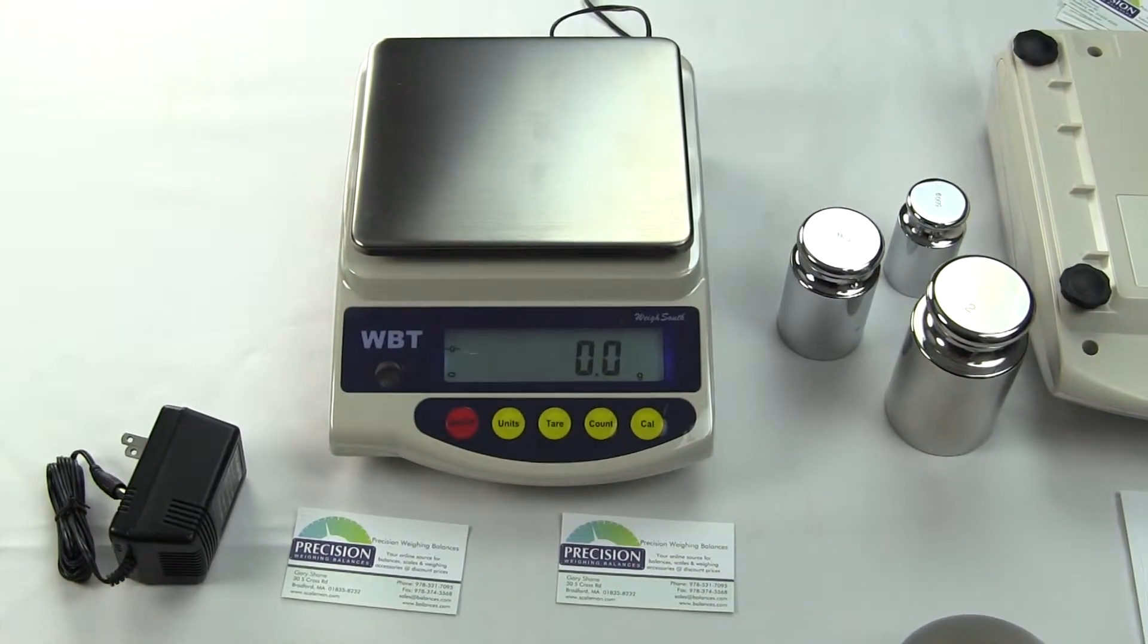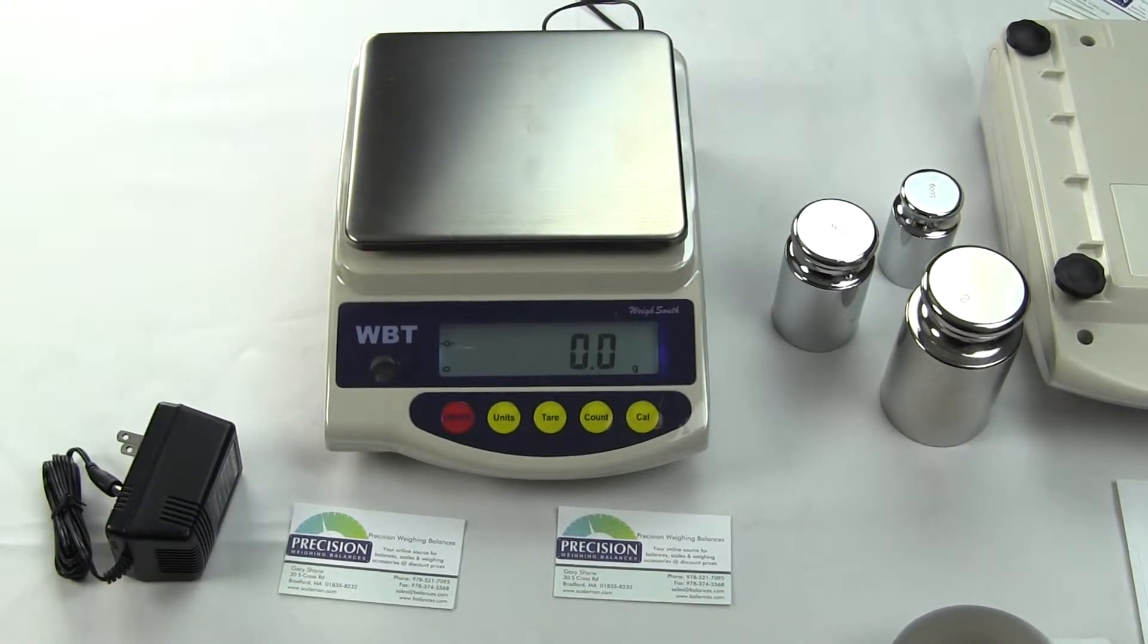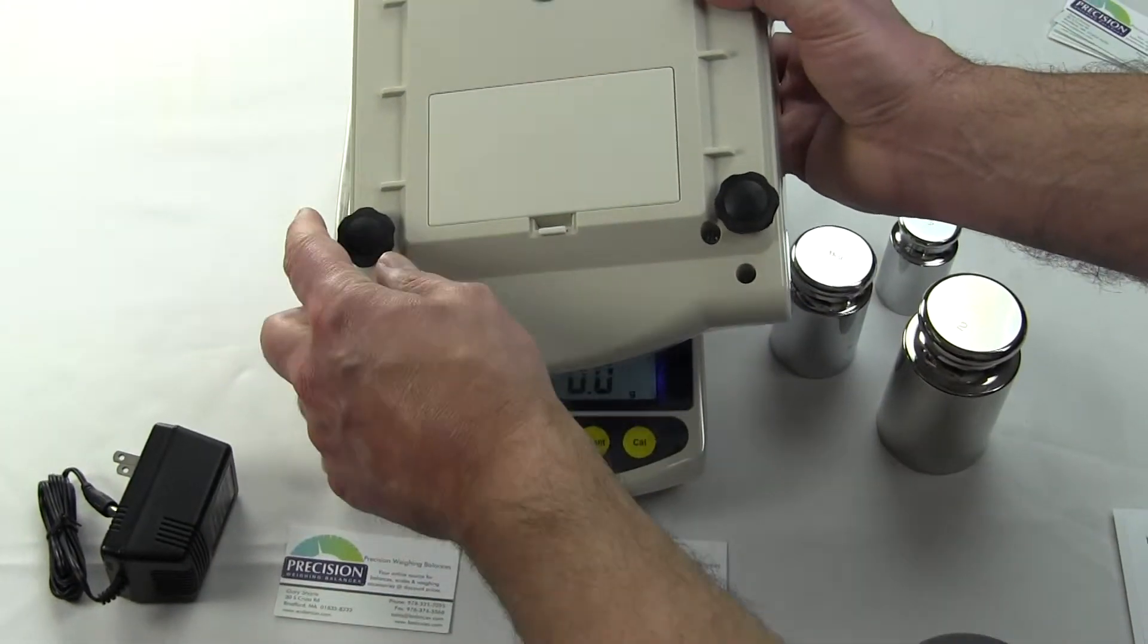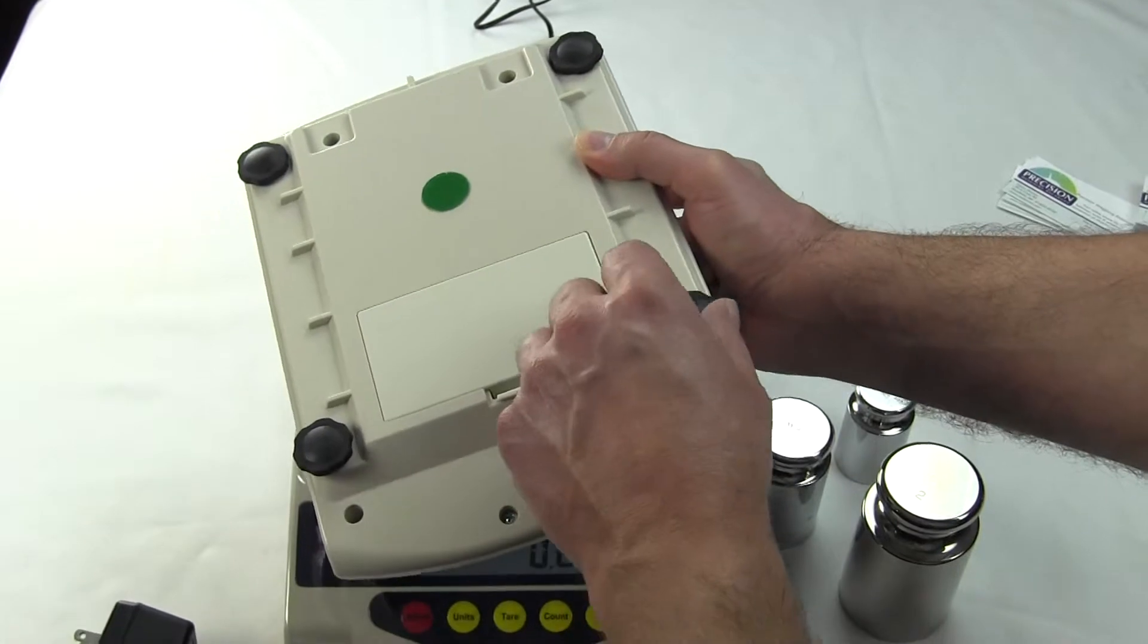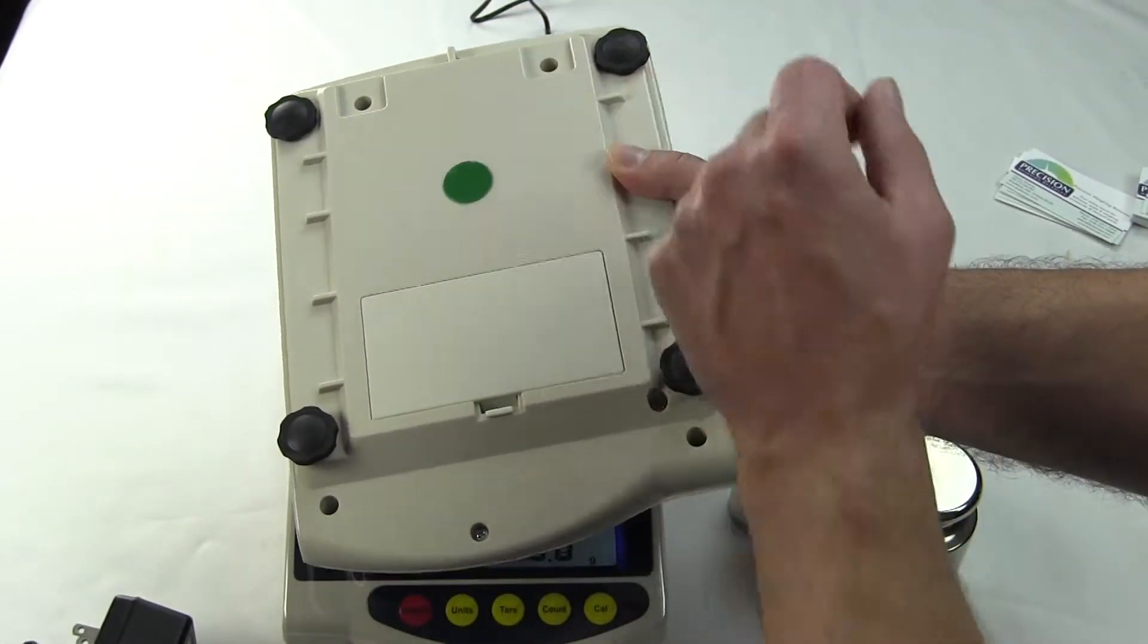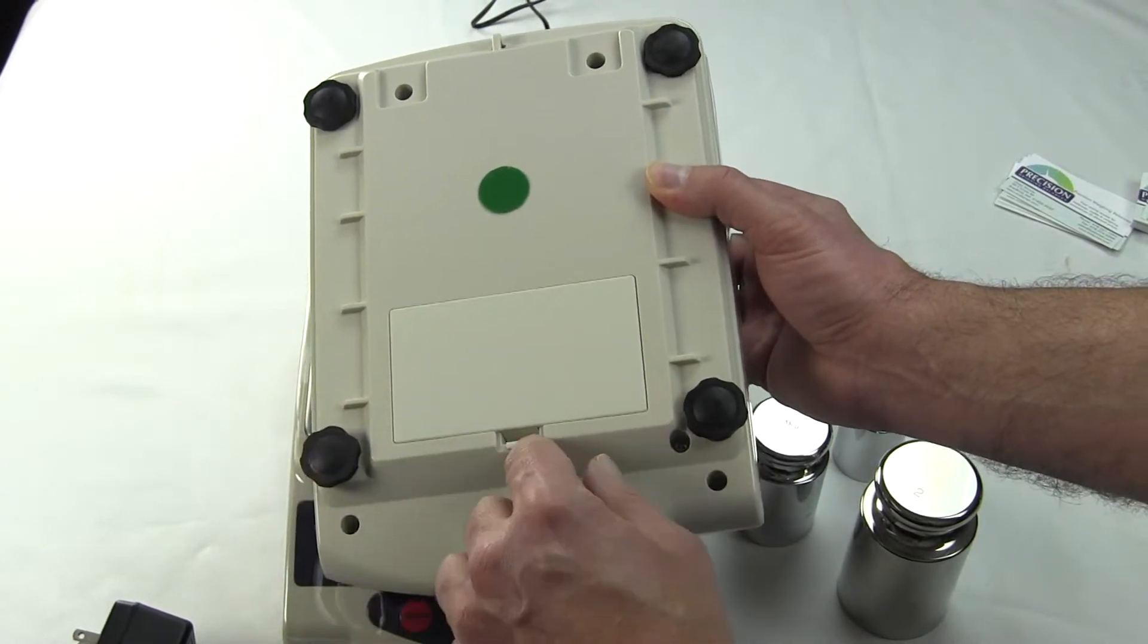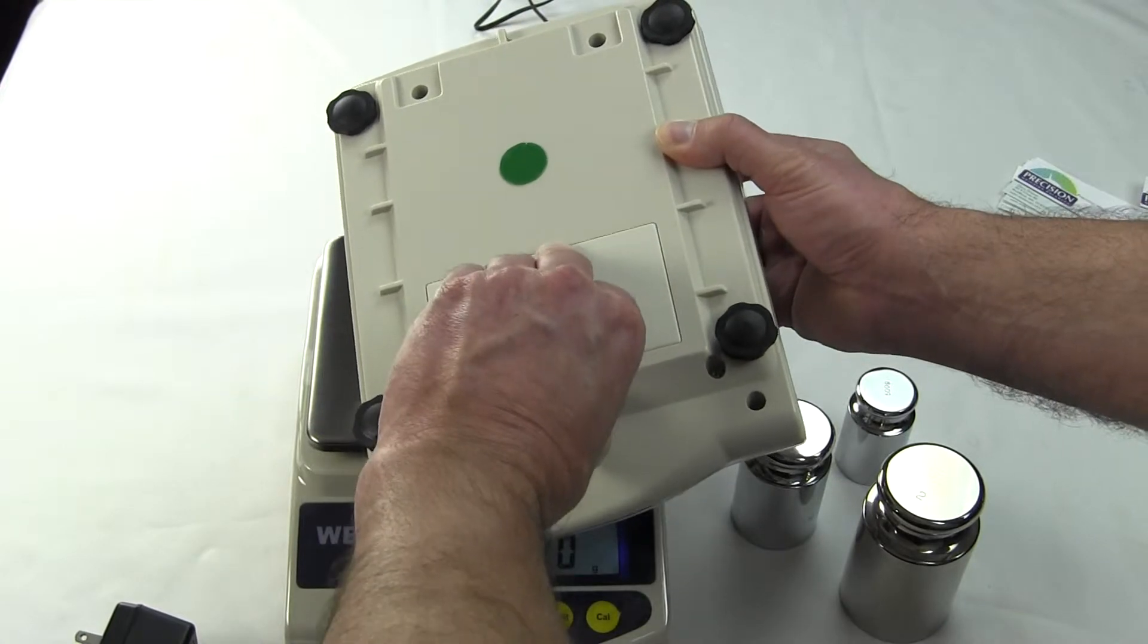To calibrate the scale, calibration is real simple. We'll go over that in a minute. I just want to show you a couple of the features. I have another scale here and you'll notice there's four adjustable feet. Most scales in this price range, some scales don't even have any adjustable feet, others might have two. So you have four adjustable feet which is really nice for leveling.